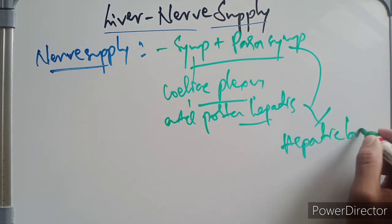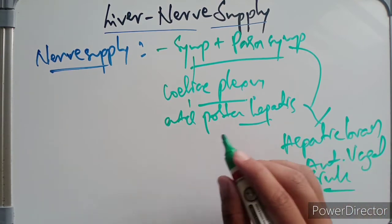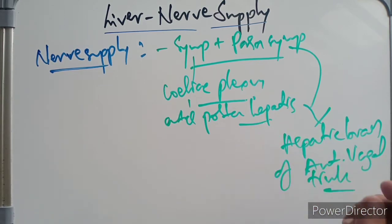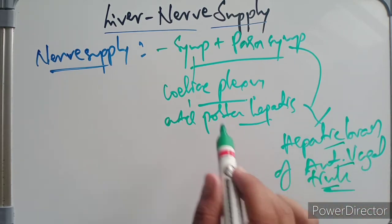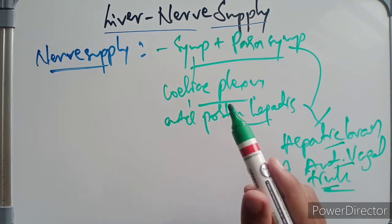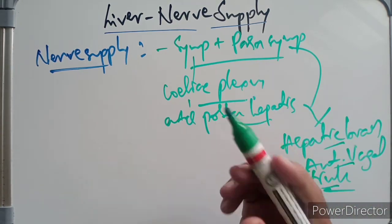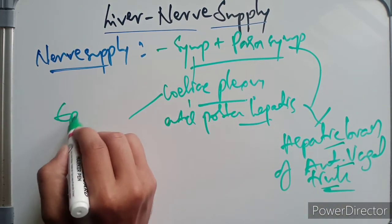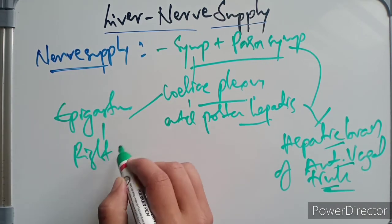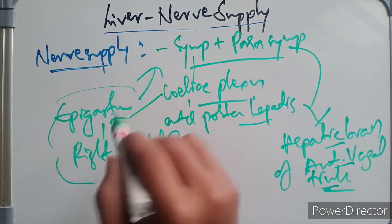The parasympathetic fibers are derived from the hepatic branch of the anterior vagal trunk. The anterior vagal trunk divides into three branches: the hepatic branch, the celiac branch, and the nerve of Latarjet, which supplies the lesser curvature of the stomach. The hepatic branch of the anterior vagal trunk is the parasympathetic supply to the liver and reaches the porta hepatis through the lesser omentum. Pain due to distension of the hepatic capsule and hepatic peritoneum runs along the sympathetic fibers and is referred to the epigastrium or the right shoulder.